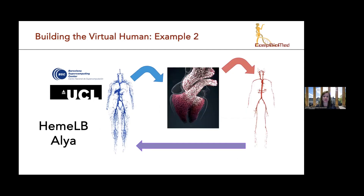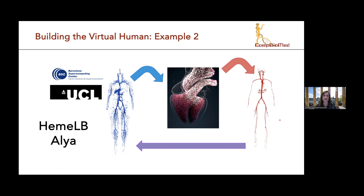Another example involves a coupled system. HEM-LB is a code that works out blood flow through the entire human vasculature — the entire human vasculature being simulated here. And ALYA is the Barcelona Supercomputing Center's code for mechanical and electrical coupling in the heart. You can actually couple these two codes together, so now you have a digital twin heart driving digital blood through a digital vasculature. You can see with this example how you can build things up, ultimately getting towards a virtual human.